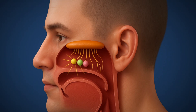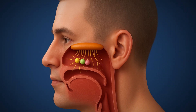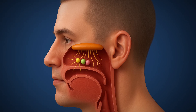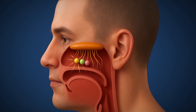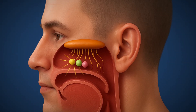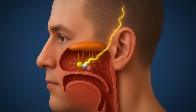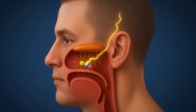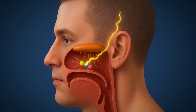Olfactory Receptors Detect the Odor. Each olfactory receptor can detect certain types of odor molecules. When a molecule binds to a matching receptor, it triggers an electrical signal.